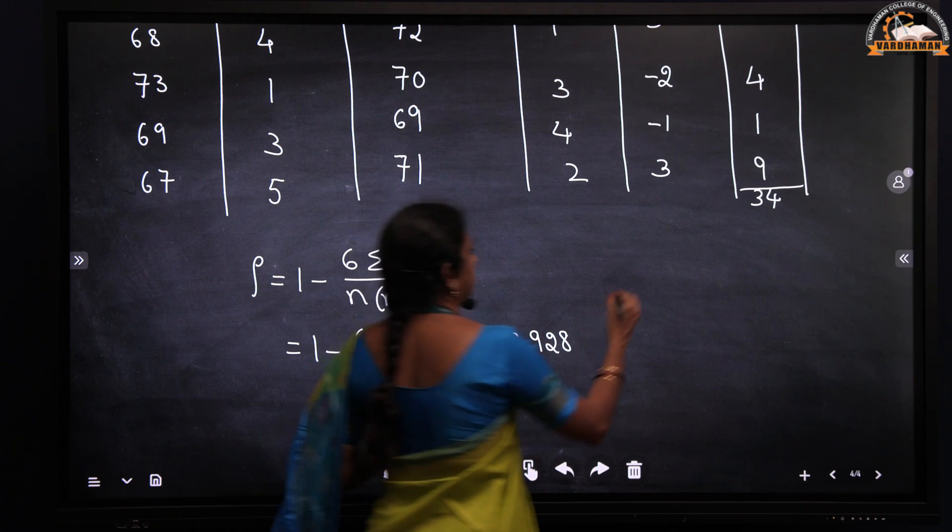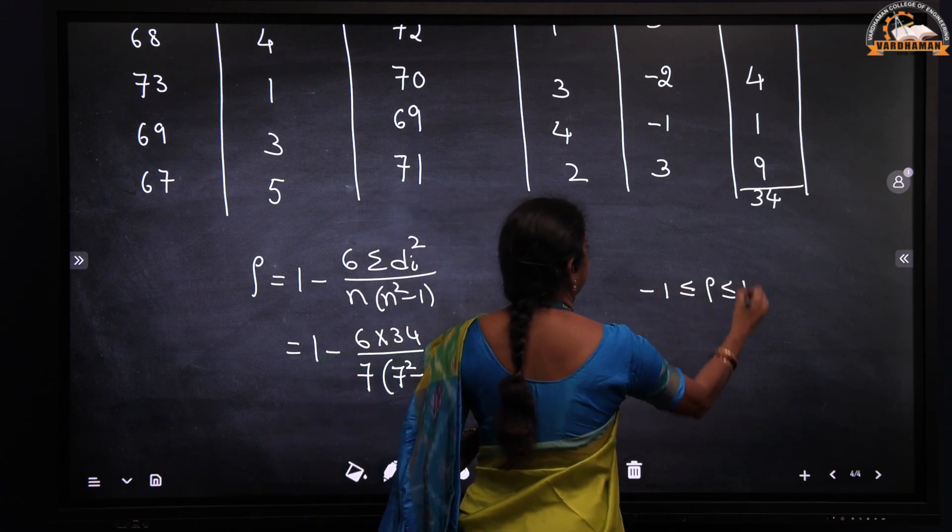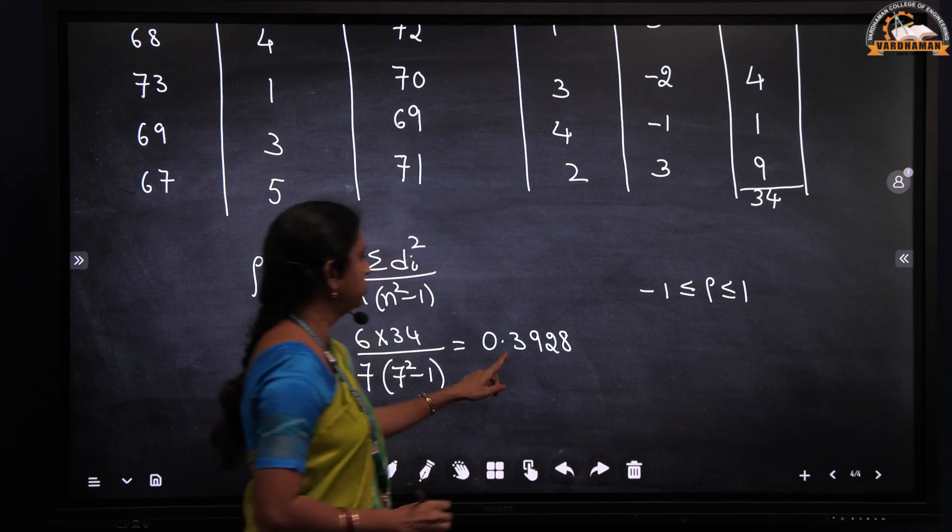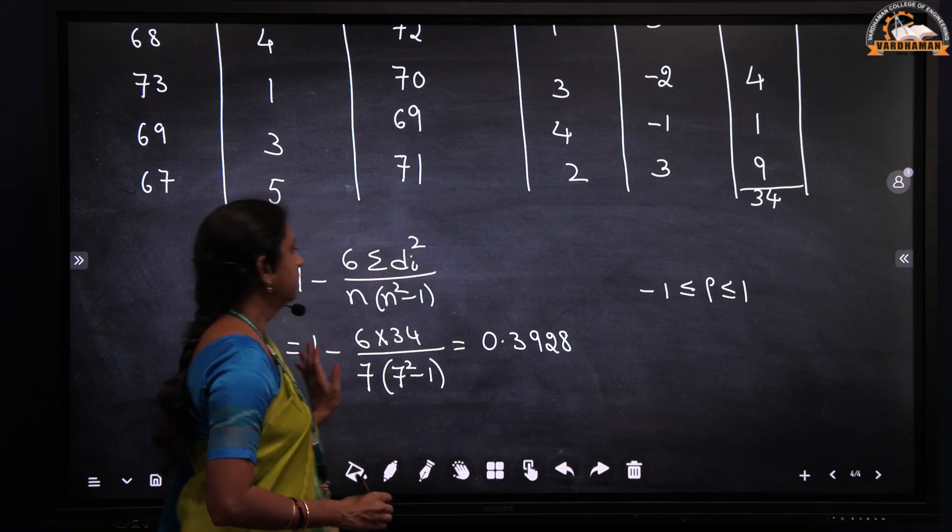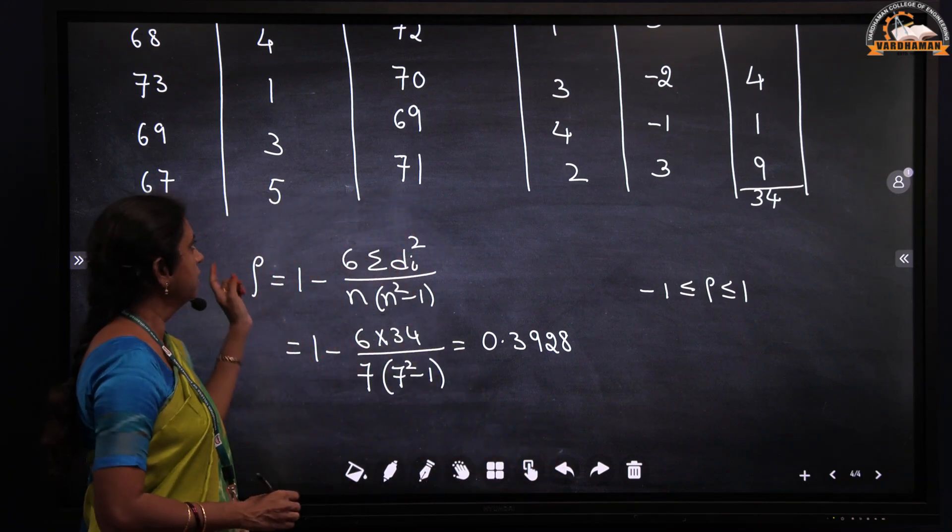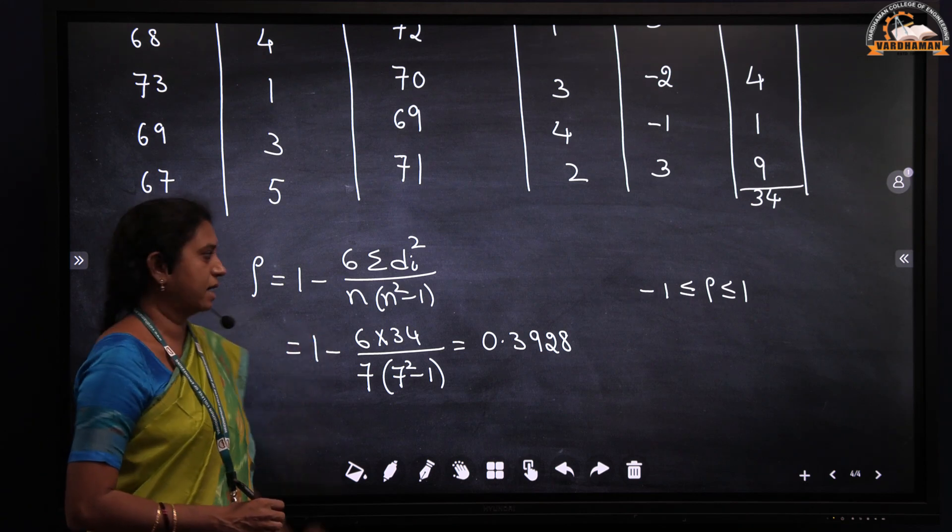We know that the rank correlation coefficient should lie between minus 1 and 1. Since 0.3928 is positive and it lies between minus 1 and 1, we can say that there is positive correlation between the ranks of the marks in mathematics and statistics. Thank you.